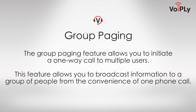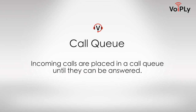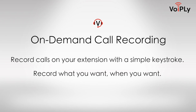Group Paging: Allows you to initiate a one-way call to multiple users, broadcasting information to a group of people from the convenience of one phone call. Call Queue: Incoming calls are placed in a queue until they can be answered. On-Demand Call Recording: Record calls on your extension with a simple keystroke — record what you want, when you want.